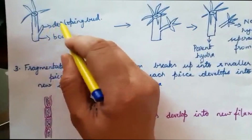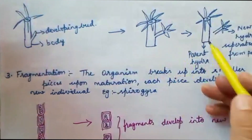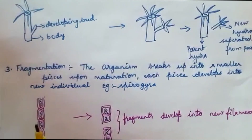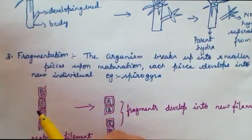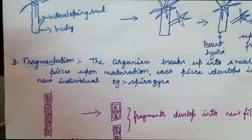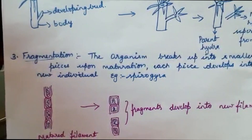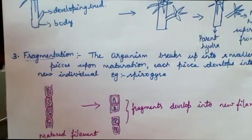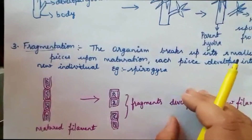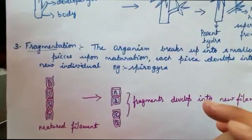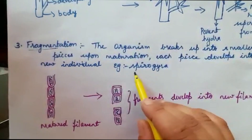Upon maturation, the new hydra gets separated from the parent organism. Next is fragmentation. Fragment means pieces — when any organism is cut into pieces, each individual piece called a fragment can develop into a new individual. A very good example is spirogyra.